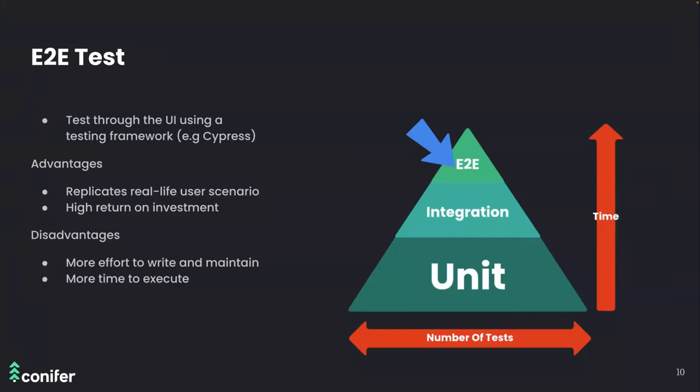Traditionally, end-to-end tests are used much less due to how costly they are to execute and maintain. However, investing in end-to-end tests usually pays off very quickly. Modern testing frameworks like Cypress were designed to make it easy to write tests, so more and more companies invest in end-to-end tests. With end-to-end tests, we have a higher level of confidence in catching bugs and regressions before they reach production — which is costly in terms of company image, developer time, stress, and productivity.